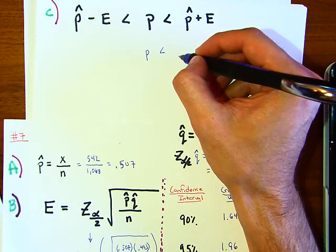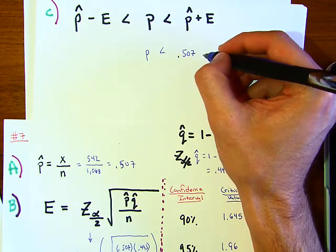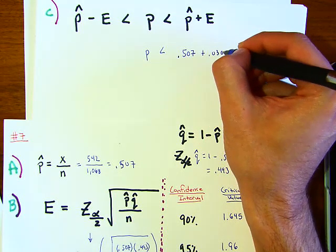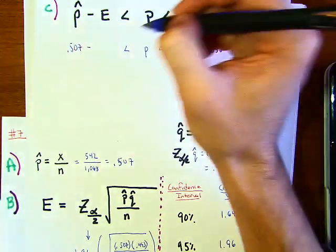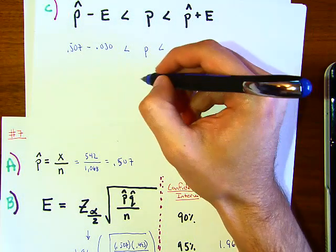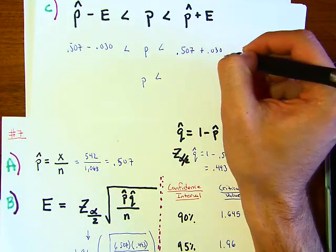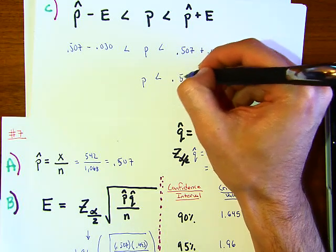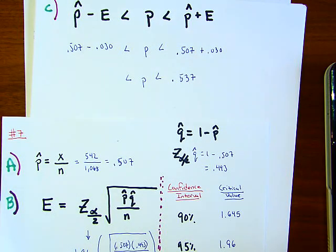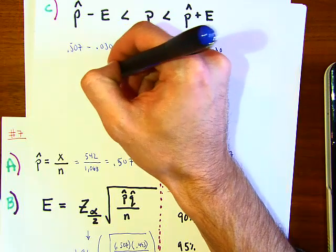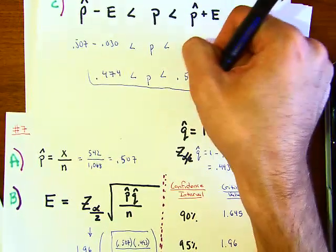Our p value has to be less than... well our p-hat we know that's 0.507, and our E value is plus 0.030, and this has to also be less than 0.507 minus 0.030. So p is less than 0.537, and then here it would be 0.507 minus 0.030, that is 0.477. And that's it, that's our confidence interval.